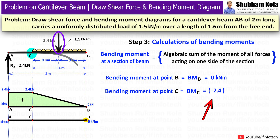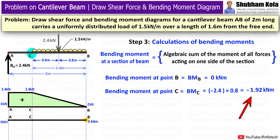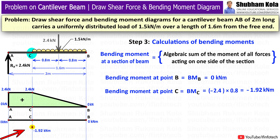For bending moment at point C, I sum moments of all forces from the free end up to point C. The downward point load of 2.4 kN acts at a distance of 0.8 meters from point C (hogging, so negative): BM at C equals minus 2.4 kN times 0.8 m, giving minus 1.92 kN·m. Since this is negative, I mark this point below the reference line, and connect B to C with a parabolic curve to represent the UDL.